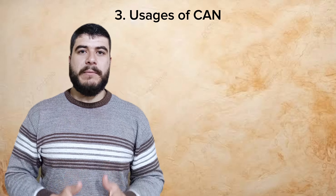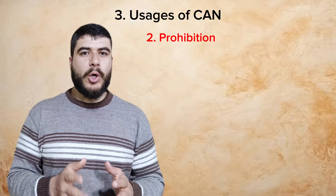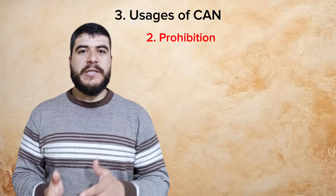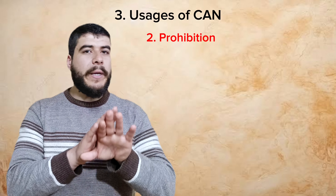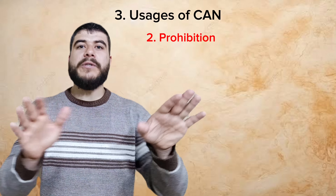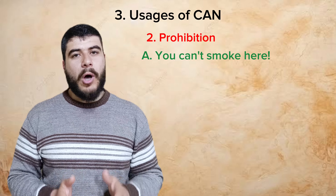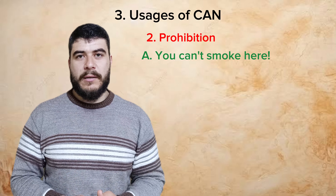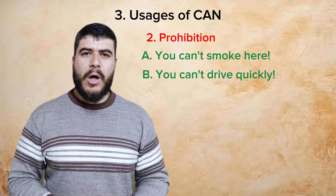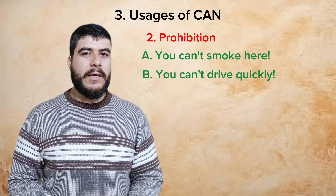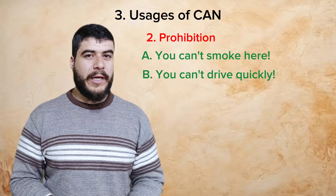If you don't want somebody to do something, this is prohibition — the opposite of permission. Prohibition means I'm not allowing you to do something, I'm disallowing you. For example: "You can't smoke here" and "You can't drive quickly."